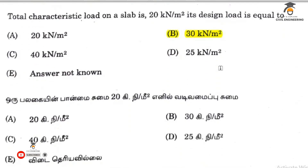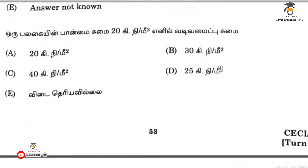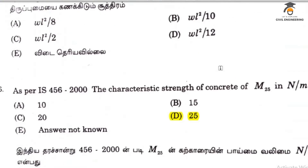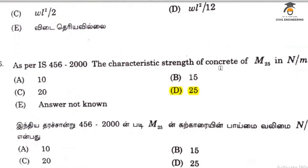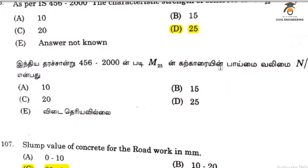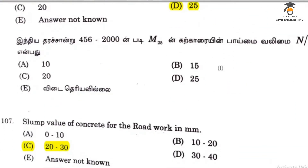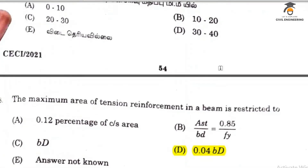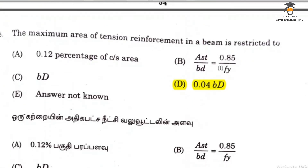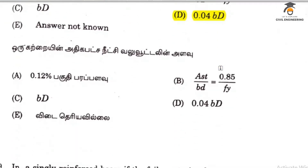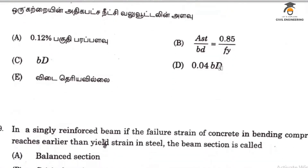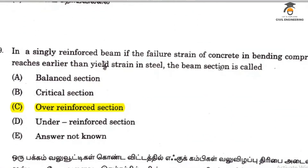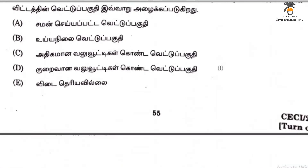The characteristic load on a slab is 13 kN per m². Coefficient slump value of concrete is 20 to 30. Tension reinforcement is 0.0004 BD. A single reinforced beam section with over-reinforcement is an over-reinforced section.